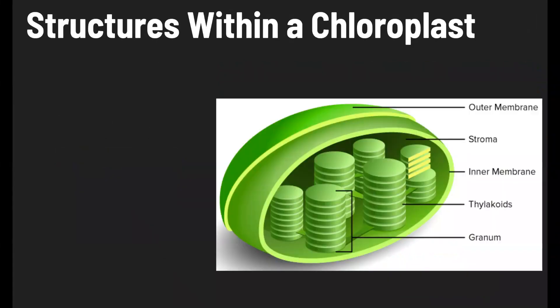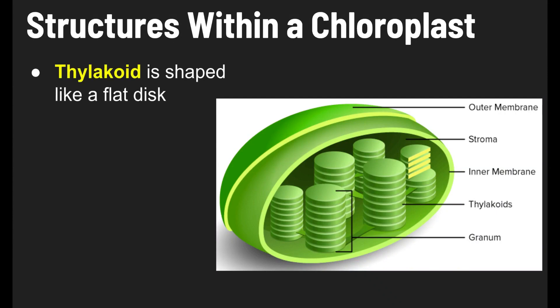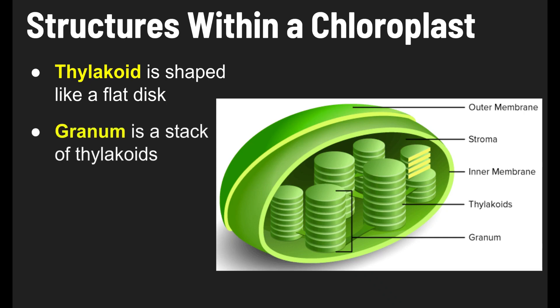Now, within a chloroplast, there are some other structures that play an important part in photosynthesis. There's a thylakoid — a thylakoid is shaped like a flat disc. You see these disc-shaped things in the picture; each one of those is a thylakoid. A granum is a stack of thylakoids.